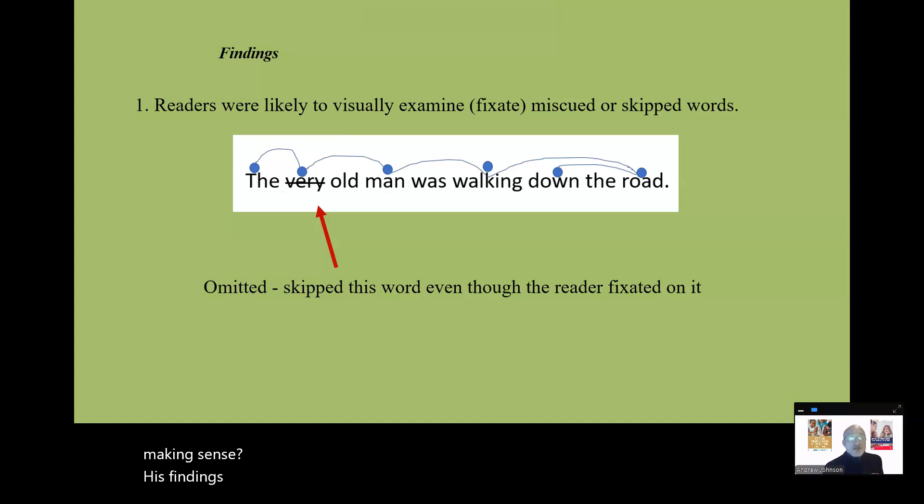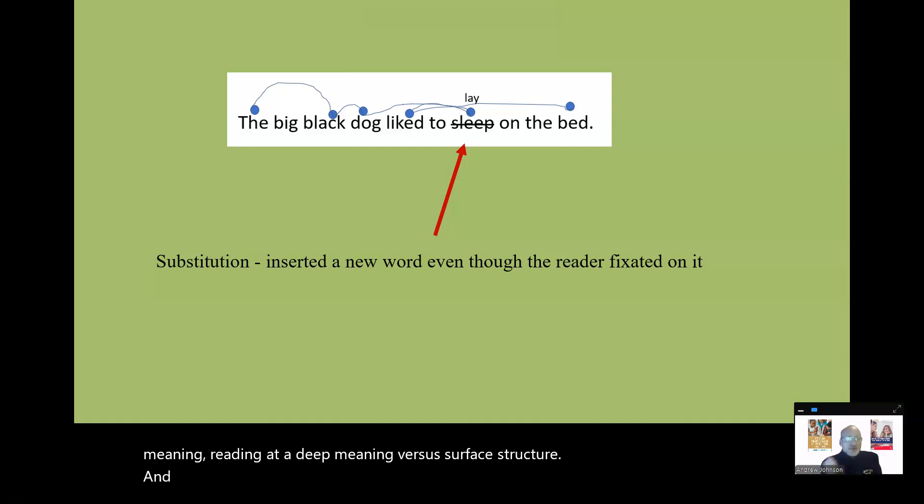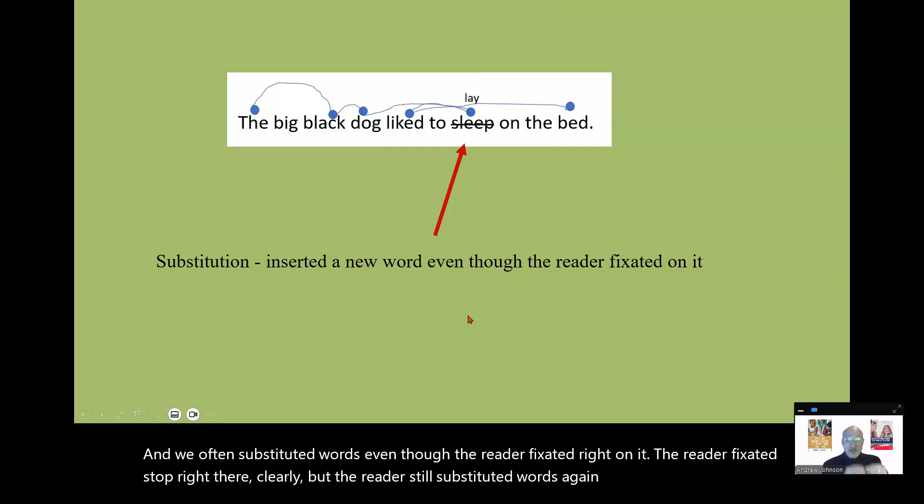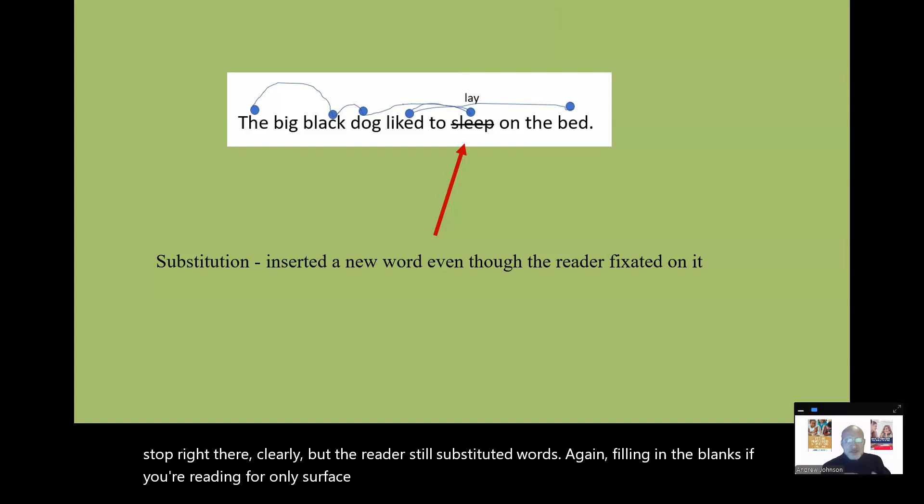His findings were readers were likely to visually examine, fixate, right on words that were miscued or skipped. Even though it stopped right on that word, they still often skipped the word. Interesting. Again, the brain is filling in the blanks. Emitted this skipped word, creating meaning. Reading at deep meaning versus surface structure. And we often substituted words, even though the reader fixated right on it. The reader fixated, stopped right there clearly. But the reader still substituted words. Again, filling in the blanks.